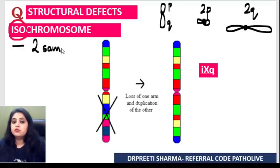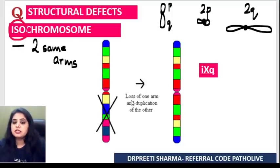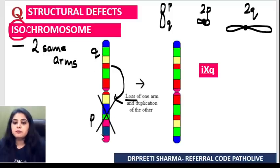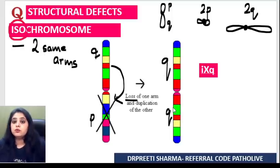Iso means two same arms. If a chromosome shows that one arm got lost and the other arm was duplicated — for example, the P arm got lost and the Q arm doubled up — this patient has landed up with two Q arms. That becomes isochromosome Q.